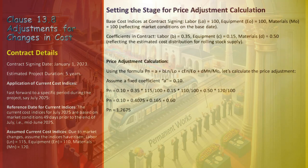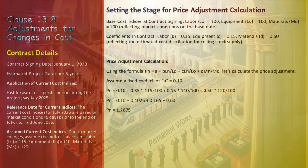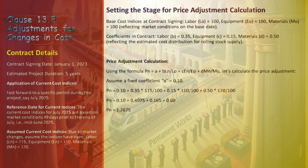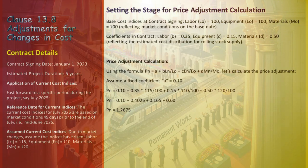For the MZER project, the contract was signed on January 1, 2023, with an anticipated project duration of five years. At the time of contract signing, the base cost indices were set as labor (L0) = 100, equipment (E0) = 100, and materials (M0) = 100. For the rolling stock supply, the coefficients were determined as labor B = 0.35, equipment C = 0.15, and materials D = 0.50.